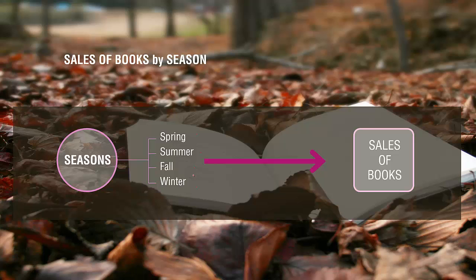The chi-square test is used to examine the difference in this case. In this case, the independent variable is the season. This independent variable has four levels, which are spring, summer, fall, and winter. Consequently, the dependent variable is the sales of books, or the amount of book sales.